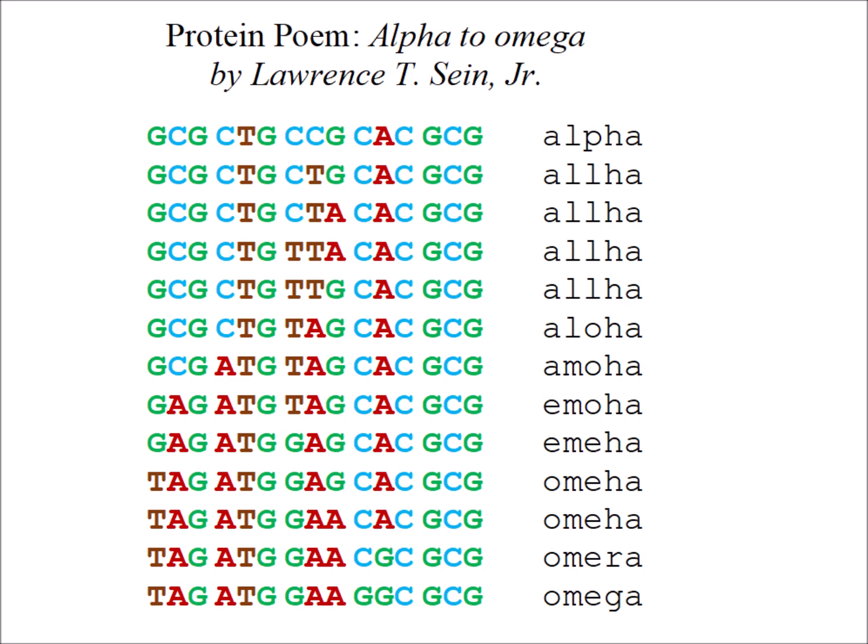Each DNA codon codes for an amino acid. These amino acids are often represented by either one-letter or three-letter codes. Here, on the left, is the DNA, and on the right, we have the corresponding one-letter amino acid codes. The DNA code is largely, but not entirely, universal in biology.